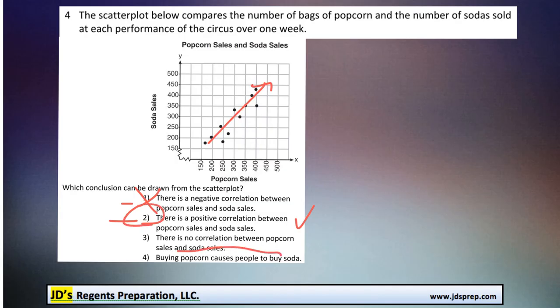The statement that there is no correlation is clearly not true because it does follow a pattern. And then simply saying buying popcorn causes people to buy soda, you can't really make that conclusion based on this data. You can definitely assume that it's likely, but number two would definitely be the correct answer for this one.